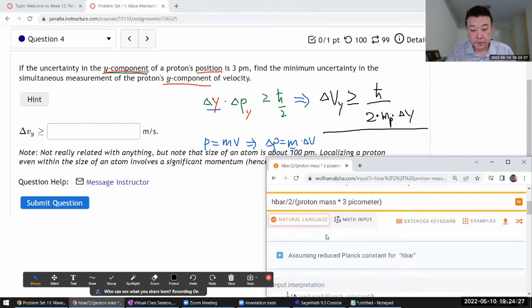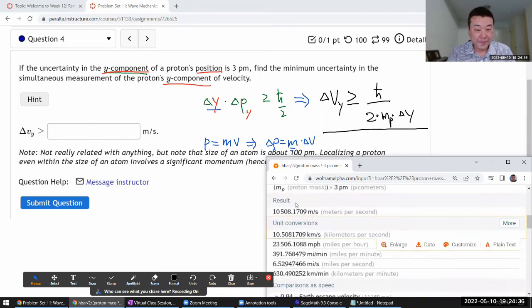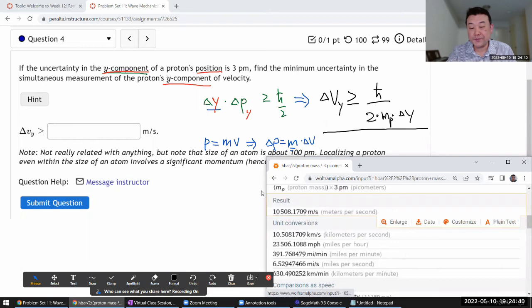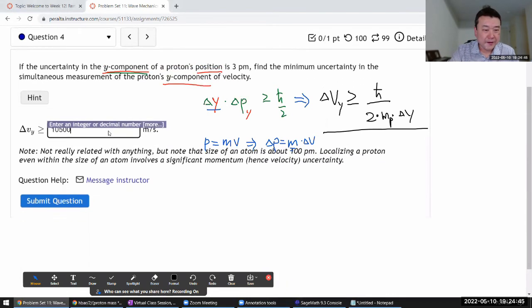Okay, so h bar over two. Okay yeah, that's the uncertainty in velocity. It's pretty high. Yeah, so in meters per second. So that's 10,500 meters per second. Yeah, that's pretty high.